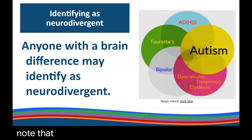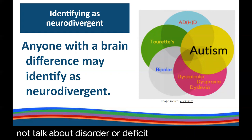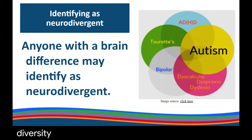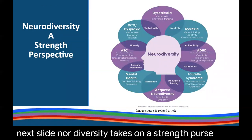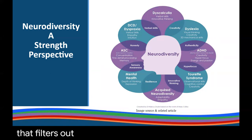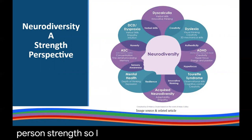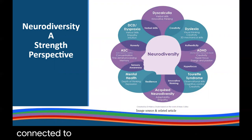Note the word 'difference' here — neurodiversity does not use the language of disorder or deficit; it focuses on diversity. Most importantly, neurodiversity takes on a strength perspective. With a focus on strengths, disabilities are understood through a lens that filters out social prejudice and deficit language, and instead builds on each individual person's strengths. The image on this slide highlights many strengths often connected to various disability labels.